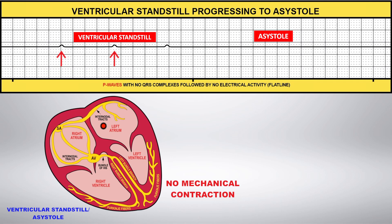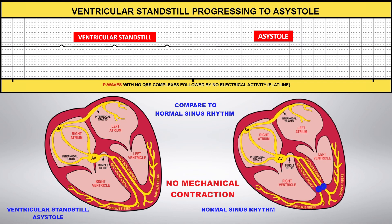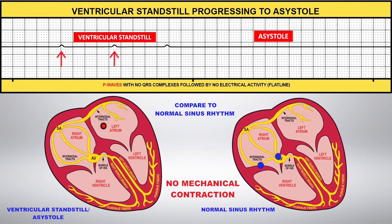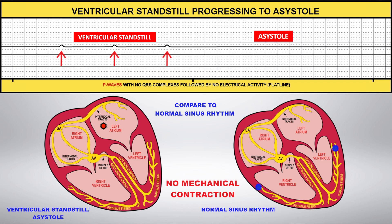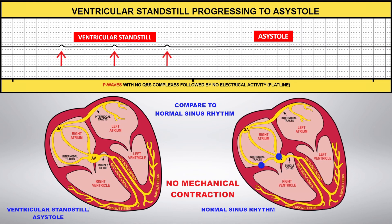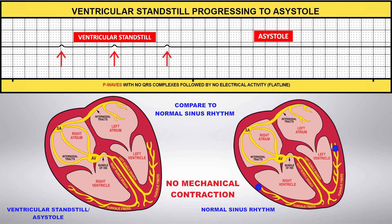Asystole occurs when there is no electrical activity in the heart in either the atrium or the ventricles, so there are no P waves or QRS complexes. Compare this to normal sinus rhythm. Asystole may appear as a slightly wavy or straight line on the EKG.